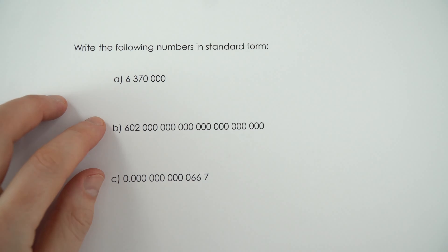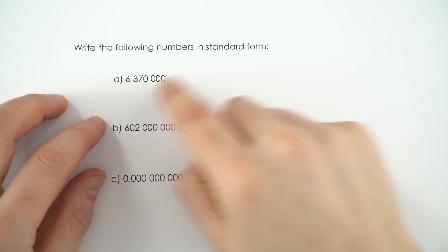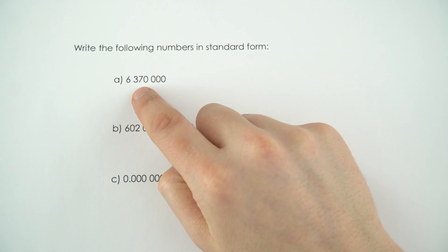So here we have some numbers which we need to convert into standard form. Now the first one, 6,370,000, that's actually the radius of the earth in metres.